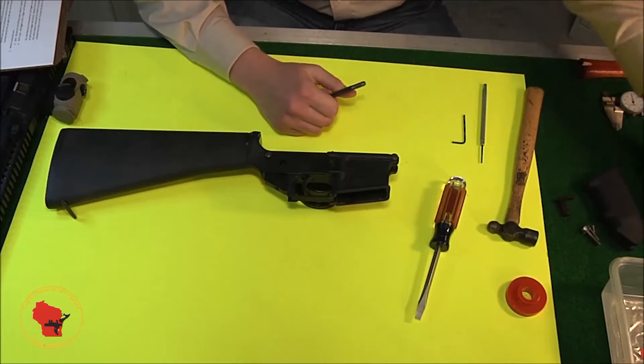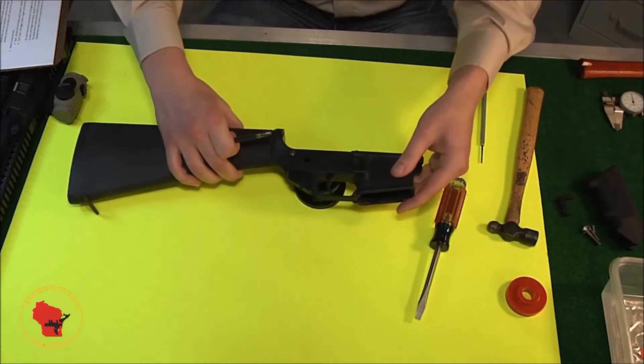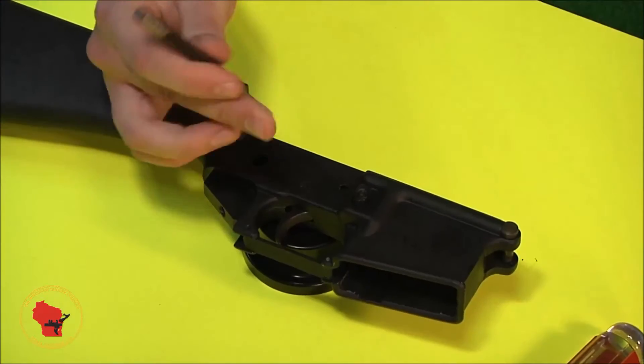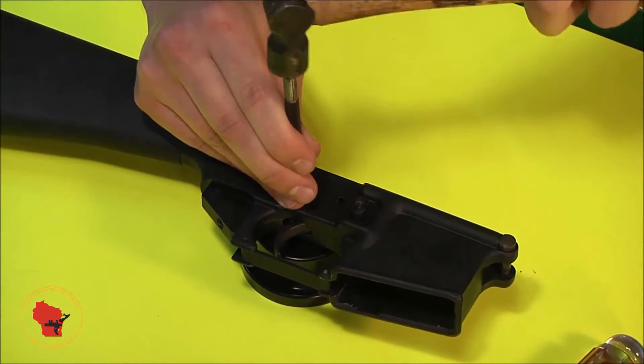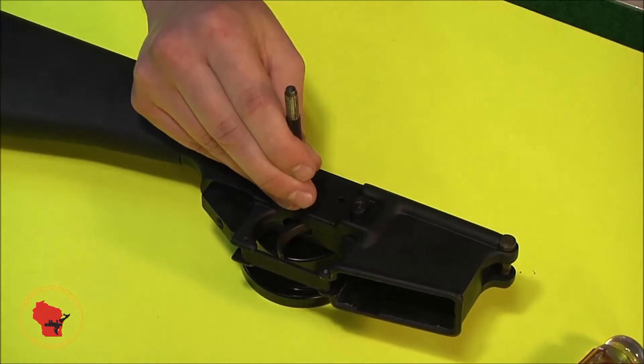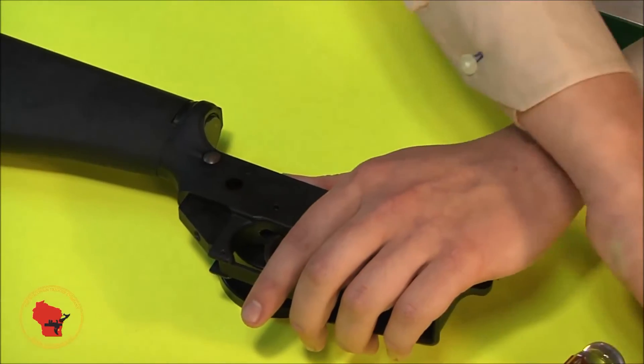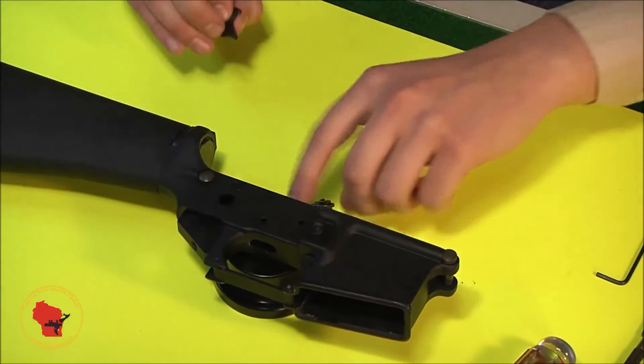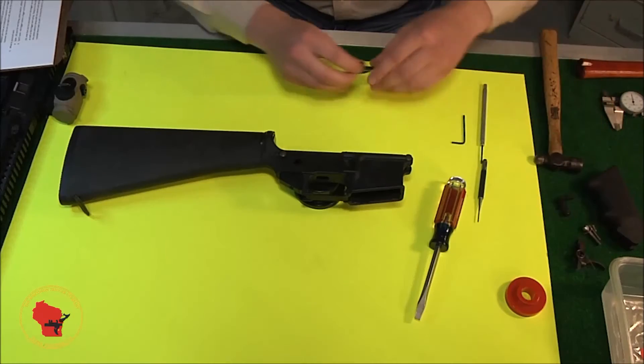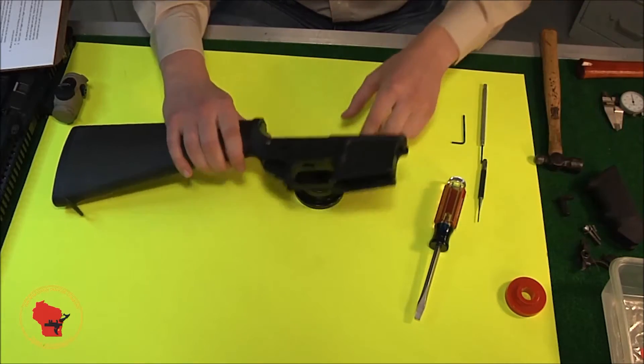Remove the hammer. Set that to the side. Now we can take the trigger out.